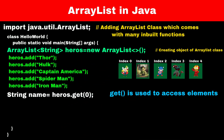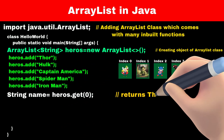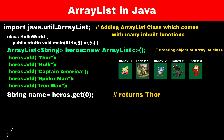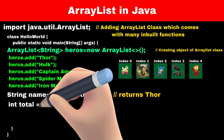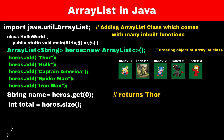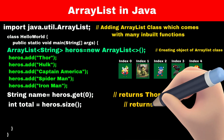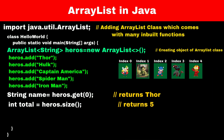The statement heroes.get(0) will return the name of the first element in the ArrayList, which is Thor. If you are curious about how many heroes are there in the tower — meaning how many things are in the list — we can use the size() function to find it out. If there are 5 heroes, it will show 5. The size() method returns the number of elements in the ArrayList.